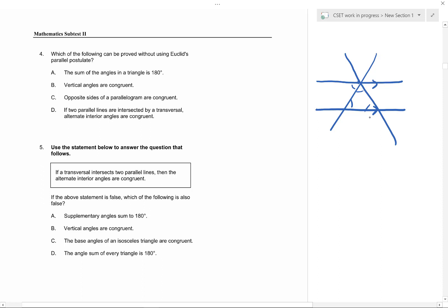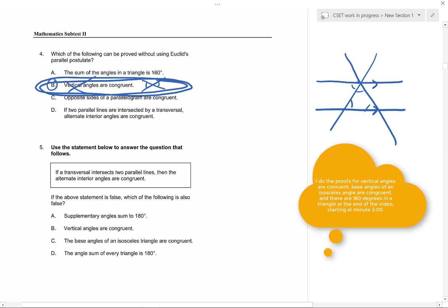But you don't need to really know all that to answer this question. Because if you look at vertical angles are congruent, vertical angles are these guys, they have nothing to do with parallel lines at all. So this is the only one that you could certainly prove without parallel lines. This is the only one that can be proved without using his postulate. Check B is our answer, done.